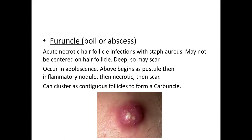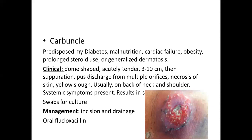Then furuncle, also called a boil or abscess — it is an acute necrotic hair follicle infection with Staph aureus. It may not be centered on the hair follicle and it is deep, so it may scar. Usually occurs in adolescence. It begins as a pustule like folliculitis, then an inflammatory nodule, then necrosis, then a scar, and can cluster as contiguous follicles to form a carbuncle. This is a picture of a carbuncle in which the underlying collection of pus is seen with multiple openings.